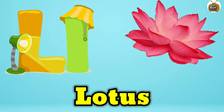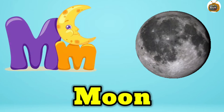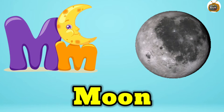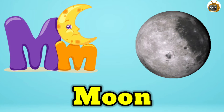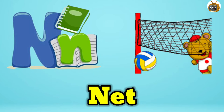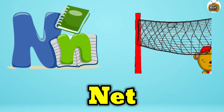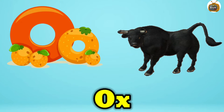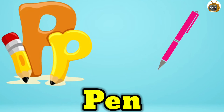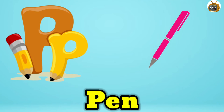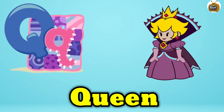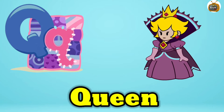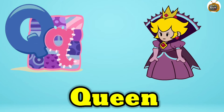K for kite, L for lotus, M for moon, N for net, O for ox, P for pen, Q for queen.